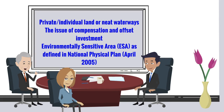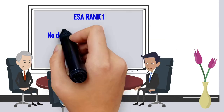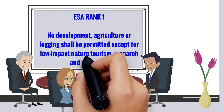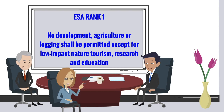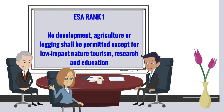As of April 2005, ESA shall be integrated in the planning and management of land use and natural resources to ensure sustainable development. The management of ESA shall be guided by the following criteria. First, ESA Rank 1: no development, agriculture, or logging shall be permitted except for low-impact nature tourism, research, and education.